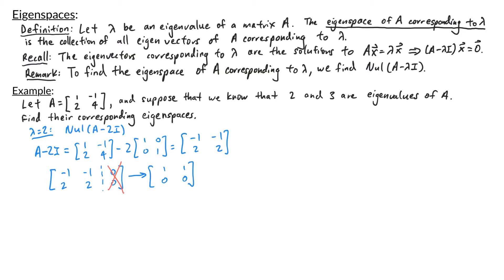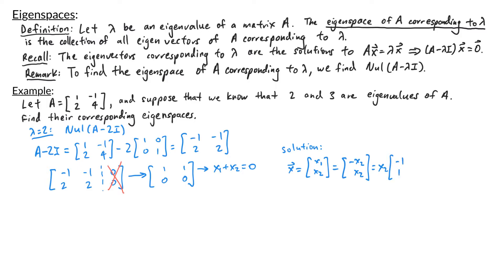To find the null space, we solve the homogeneous equation A minus 2I times x equals 0 and write the solution in parametric vector form. The first row gives us x1 plus x2 equals 0. So the solution vector x with entries x1 and x2 becomes x2 times the vector negative 1, 1, after rewriting x1 as negative x2 and factoring out x2. The eigenspace corresponding to 2 is the span of the vector negative 1, 1.